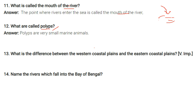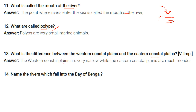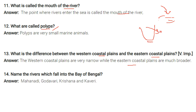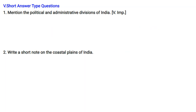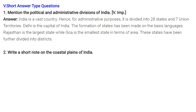What is the difference between the western and eastern coastal plains? The western coastal plains are very narrow while the eastern coastal plains are much broader. Name the rivers that fall into the Bay of Bengal: the Mahanadi, Godavari, Krishna, and Kaveri all fall into the Bay of Bengal.